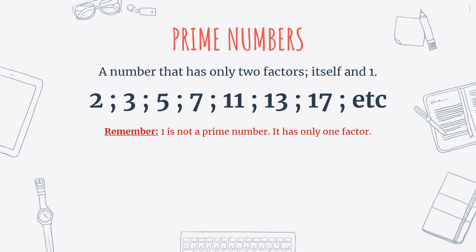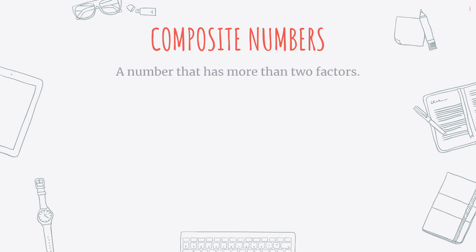So then what is the opposite of a prime number? The opposite of a prime number would be a composite number. Composite numbers are numbers that have more than two factors. So if you have a look at this list, all of these numbers have more than two factors.